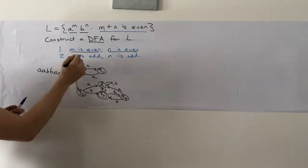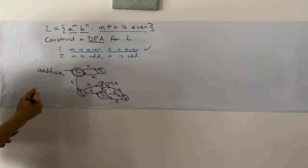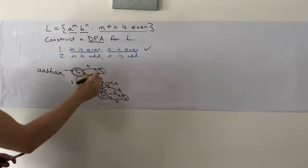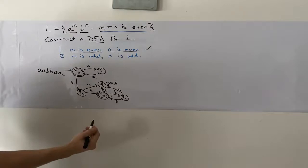So now let's, so we handle this case. Now let's handle the other case of when M is odd and N is odd. So that means we're in Q1 right now after reading an odd number of A's.